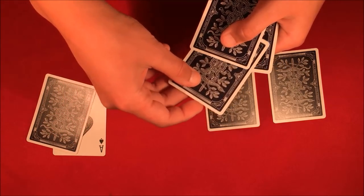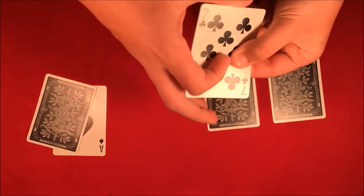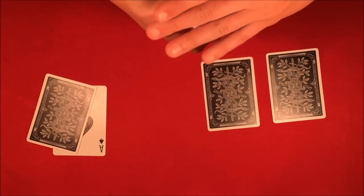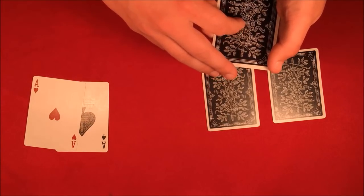I'll take one of the Aces, put it into the middle of this packet, give it a snap, and as you can see, the Ace should now have disappeared from this black packet and reappeared over here next to the Ace.